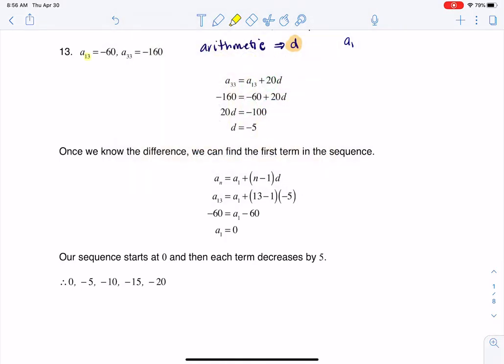Because if this is 13 and this is 33, if we look at the subscripts there, I had to go 20 terms to get from a sub 13 to 33. And if you're wondering where I got the 20, I'm literally doing 33 minus 13, 20 terms.